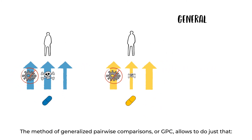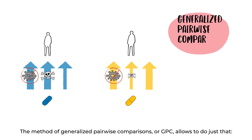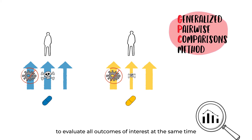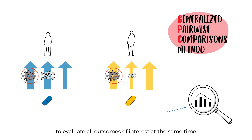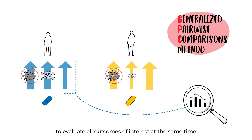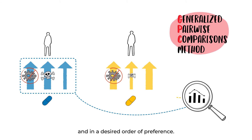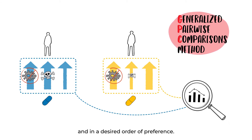The method of Generalised Pairwise Comparisons, or GPC, allows us to do just that — to evaluate all outcomes of interest at the same time and in a desired order of preference.